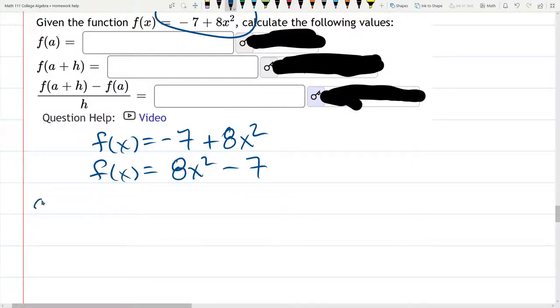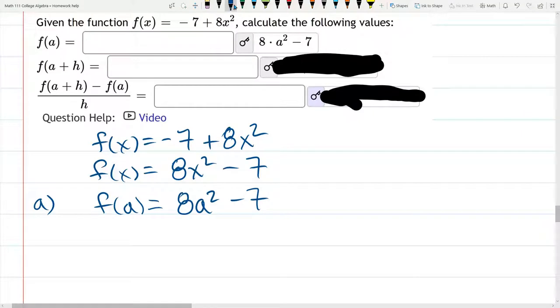Now we're going to plug in, this is for the first part, we're going to plug in a. So wherever you see x is going to become a. And that's all we get. 8a squared minus 7. And that appears right there.